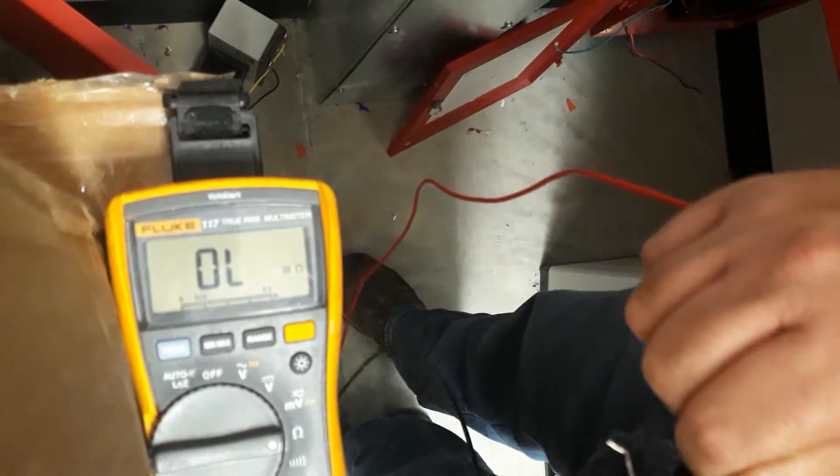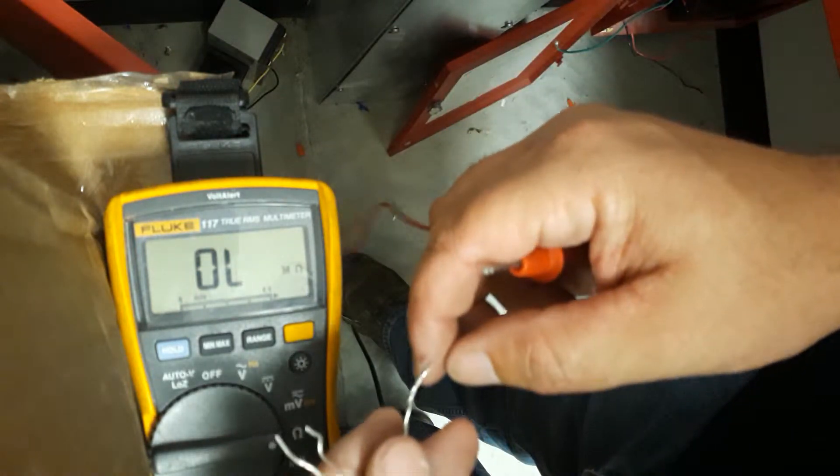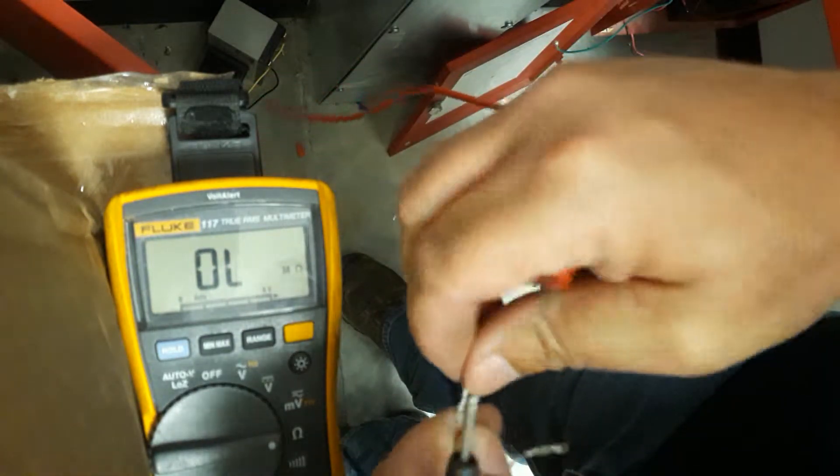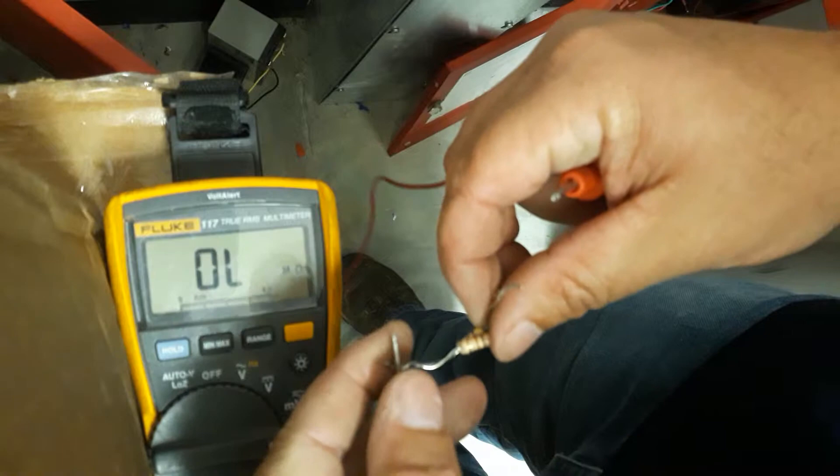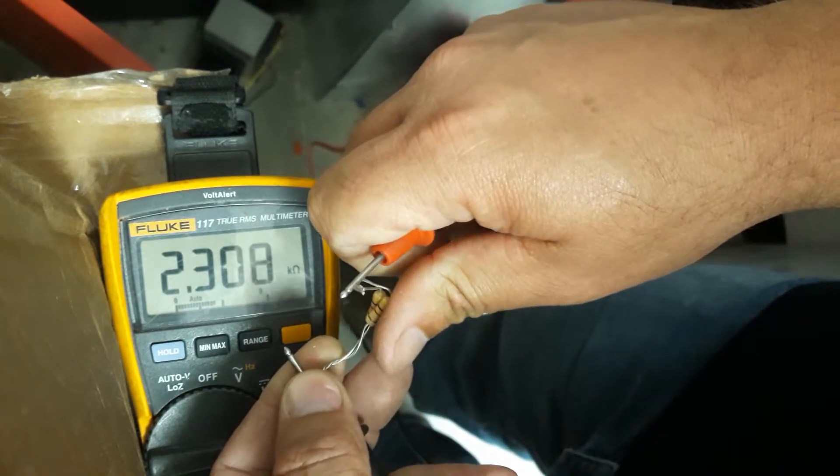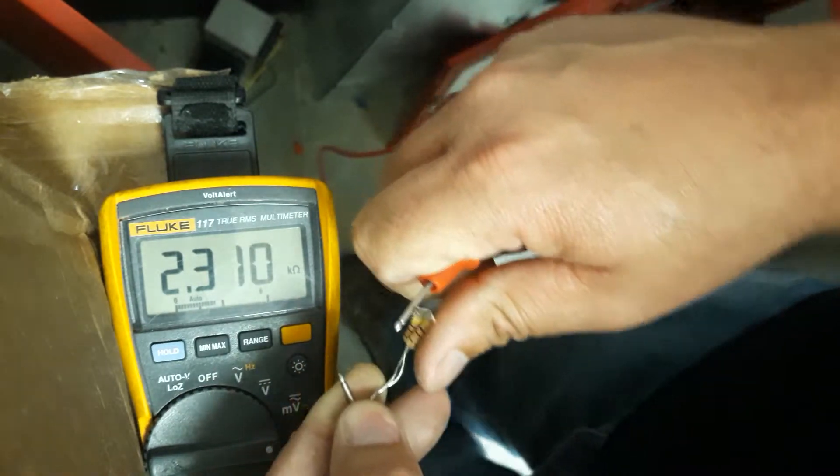So I didn't have any 2.2K ohm resistors. So what I'm going to do is twist one end of it together, twist the other end together, and as you can see 2.3, so that will be close enough to satisfy that panel while I'm working on it.